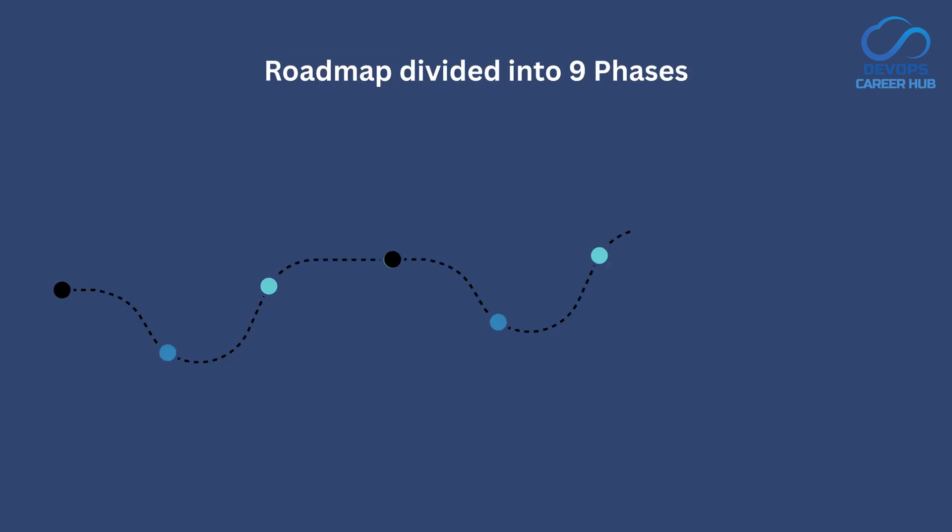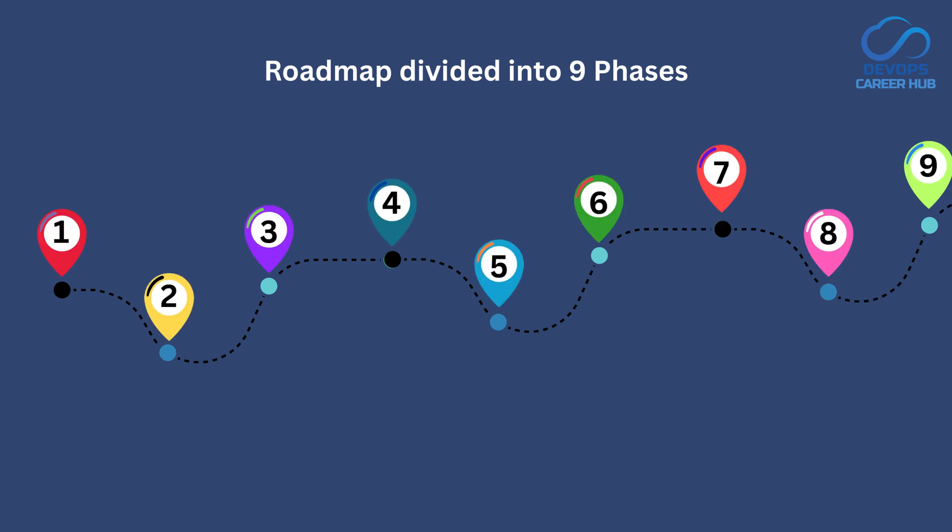I have divided this DevOps roadmap into 9 clear phases, each covering specific tools and technologies. These phases are carefully organized to make learning smoother and more effective. Let's start with phase 1.